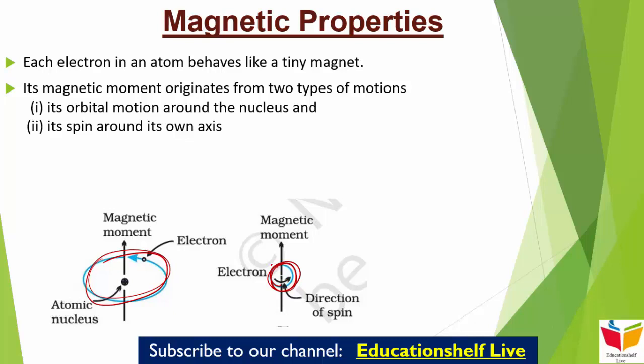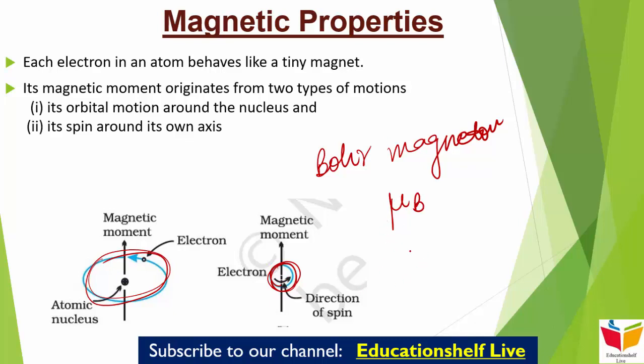जो magnitude होता है इस magnetic moment का वो बहुत छोटा होता है, इसीलिए हम कहते हैं कि हर एक electron एक tiny magnet की तरह behave करता है। इसका magnitude हम measure करते हैं Bohr magneton की unit में, जिसे हम μB से represent करते हैं। इसका magnitude होता है 9.27 × 10^-24 ampere metre square — इतना छोटा होता है इनका magnetic moment।